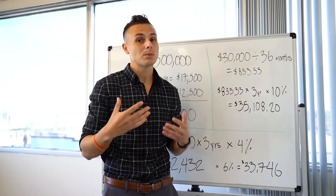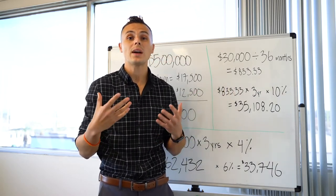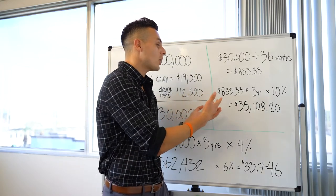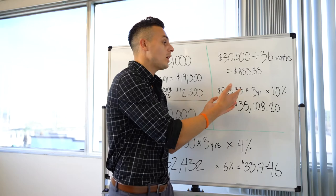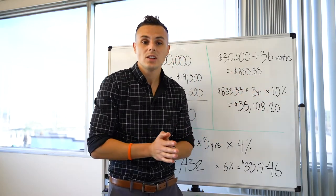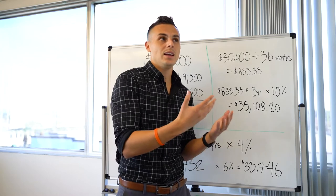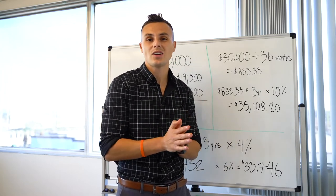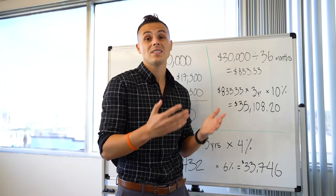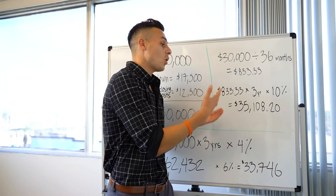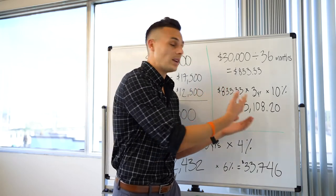Now if you want to get to this number faster, you might want to explore investing. So let's just say you put that $833.33 over three years at an annual rate of return of 10%, which since its inception in 1924, the S&P 500 has earned over 10% and in the last 10 years over 11%. So that's $35,108.20.